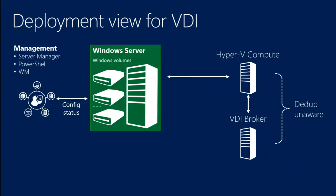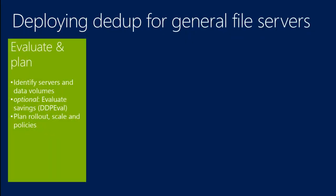The second deployment view is VDI that we've been talking about. In this case, I want to call out that the Hyper-V compute — typically a cluster but not necessarily — does not actually need to know anything about deduplication. It needs to be Server 2012 to use SMB3 to talk to the file server, but you don't have to update your Hyper-V servers in order to use deduplication for the VDI scenario. I promised to give you step-by-step information on how to use this — I really want to show you how easy it is. The goal is to give you everything you need to know to go deploy and try out dedupe in two slides.